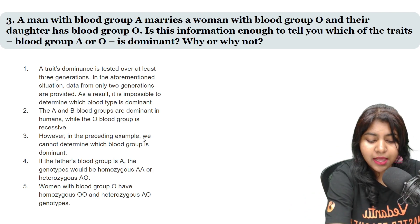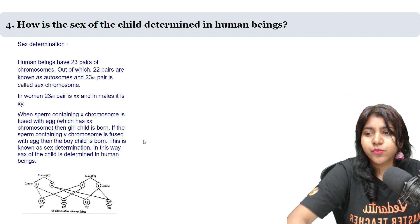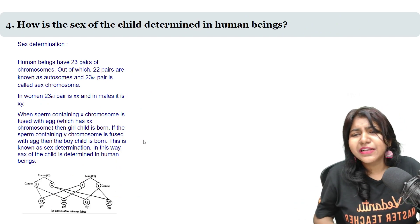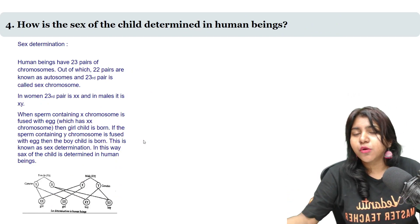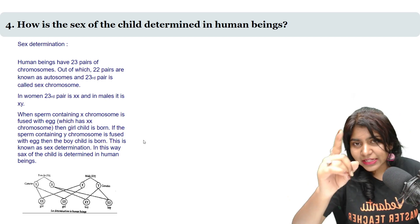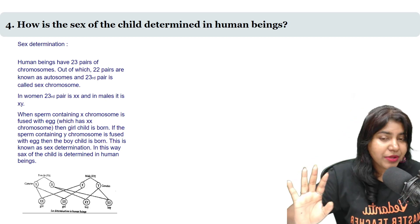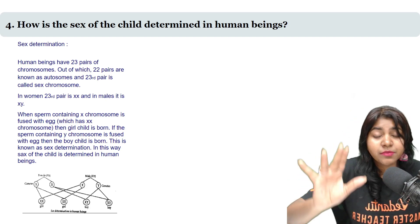Moving on to the next question: how is the sex of the child determined in human beings? Of course, we have 23 chromosomes.